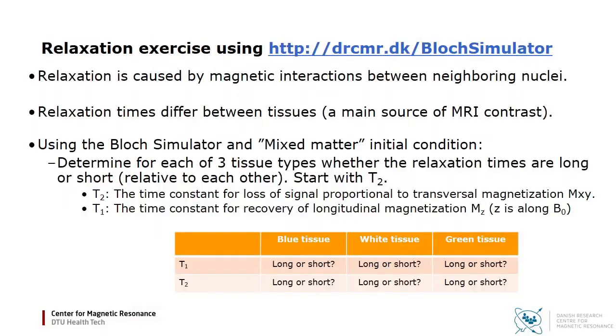For each tissue type, you can determine whether T1 and T2 is relatively long or relatively short. When you have determined the relative T1s and T2s, you can try to establish the relative proton densities that are proportional to the tissue's equilibrium magnetizations.